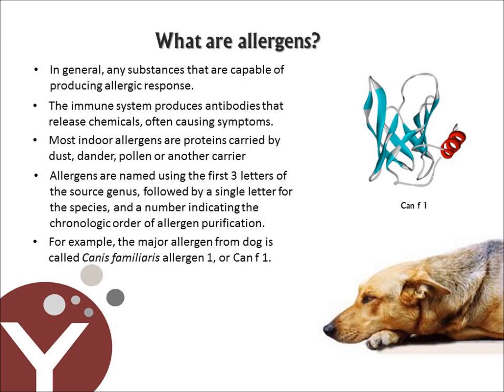People often refer to dust, pollen, animal dander, and molds as allergens, but technically, most indoor allergens are proteins produced by or carried by these substances. Allergens are named using the first three letters of the source genus, followed by a single letter for the species, and a number indicating the chronologic order of allergen purification. For example, the major allergen from dog is called Canis Familiaris Allergen 1, or CanF1 for short.